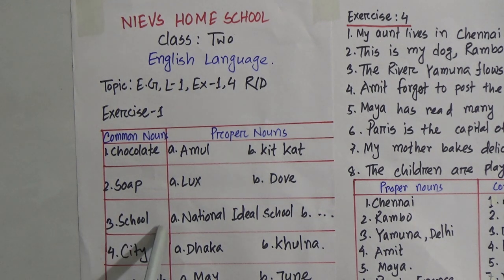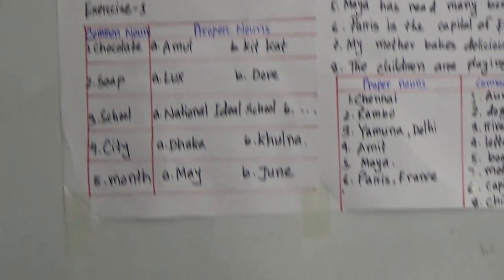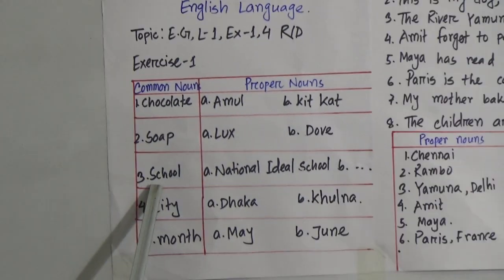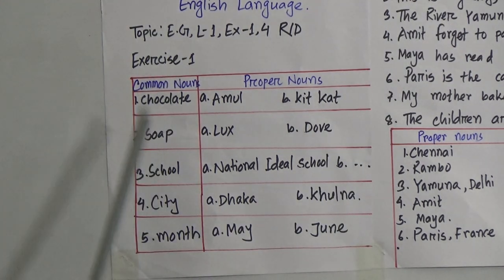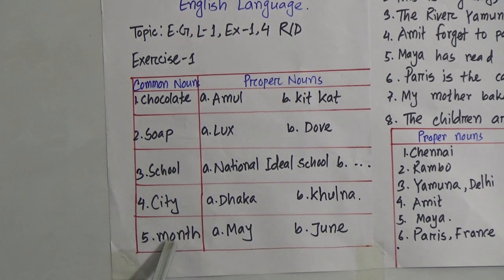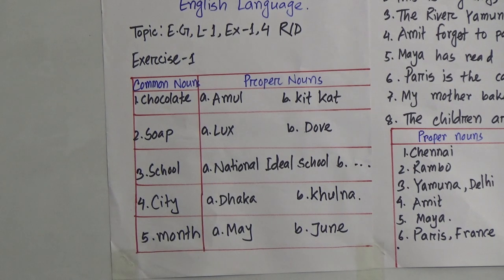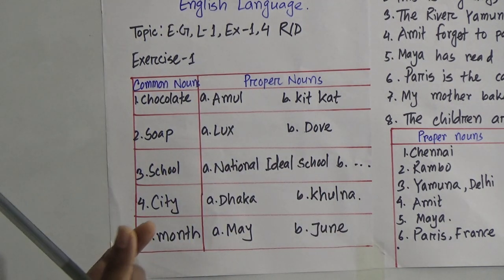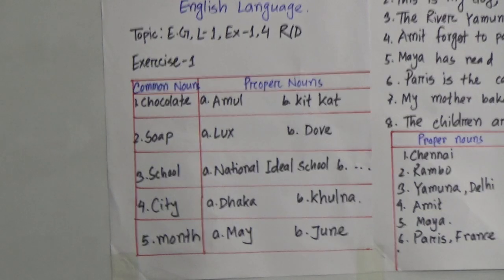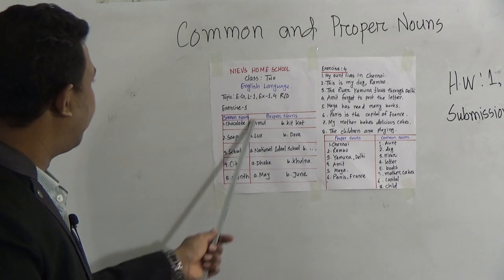Then, school. Here you have to write some school names. Our National Ideal English Version School — that's our proper noun, but school is a common noun because school contains all the schools. Then city — Dhaka city, Khulna city, Barisal, Jessore. Then month — you know this is January month. So you may write about January, February, May, or June, whatever you like. But I will suggest you to write those month names whose spellings are short and easy, because if you write a big month's name then you may get some spelling mistakes.